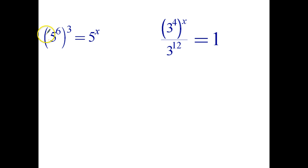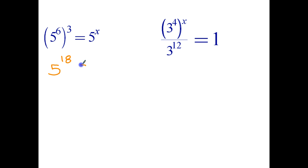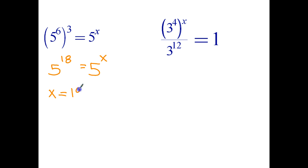Next: 5 to the 6th, all to the power of 3, equals 5 to the x. Index law number 3 says to raise a power to a power, you multiply the powers. So we go 6 times 3 equals 18, giving us 5 to the 18th equals 5 to the x. Because the bases are the same, the indices must be equal, and therefore x equals 18.